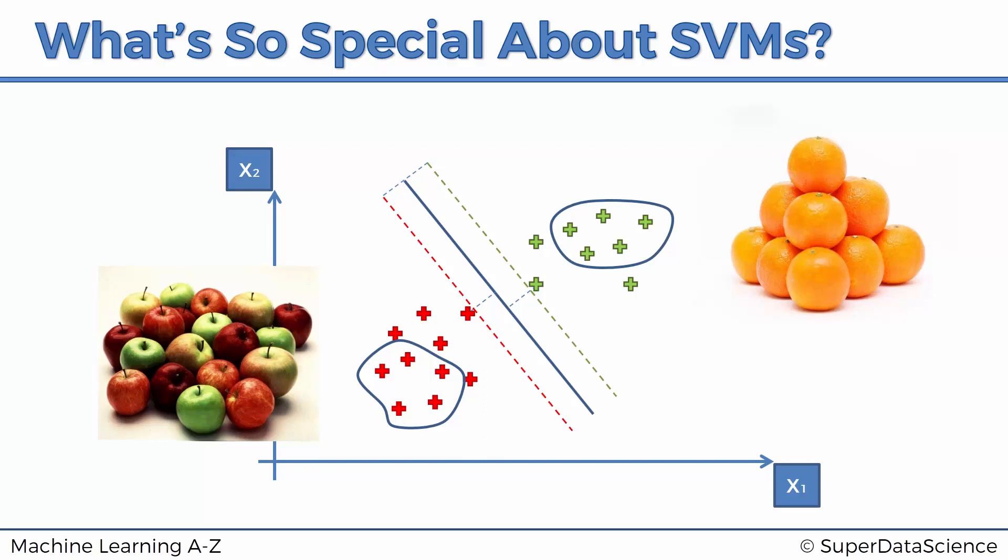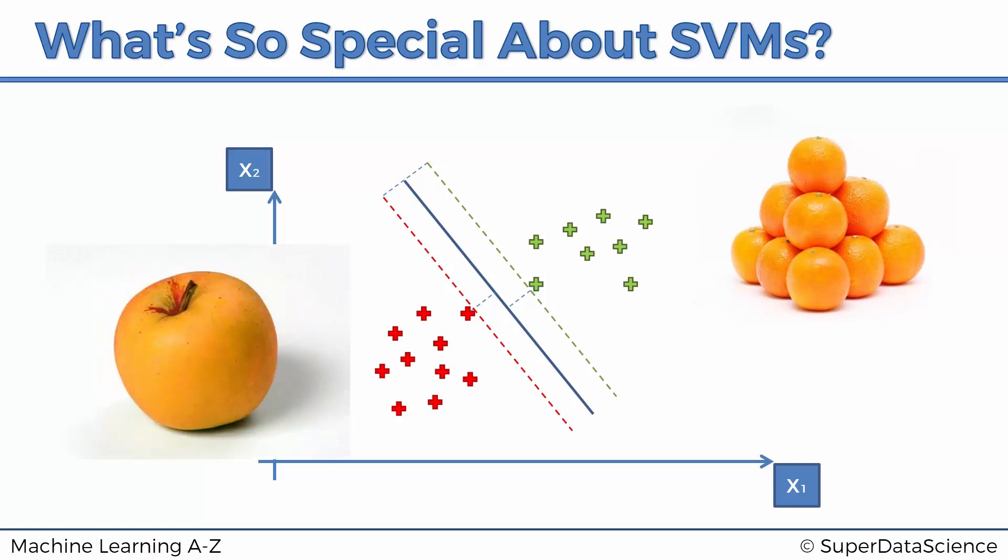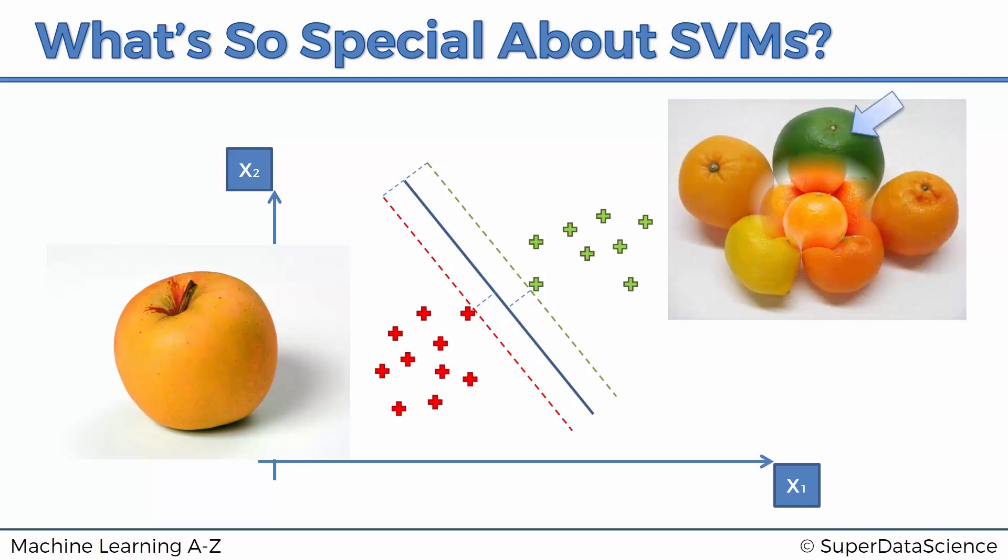In the case of support vector machines, it's a bit different. Instead of looking at the most stock standard apples and oranges, support vector machines actually look at the apples that are very much like an orange. Here you can see an apple which is orange in color. It's very easy to confuse this apple with an orange. They would look at oranges which are more like apples than anything else. The SVM would pick the one that looks the most like an apple. In this case, we have a green orange.